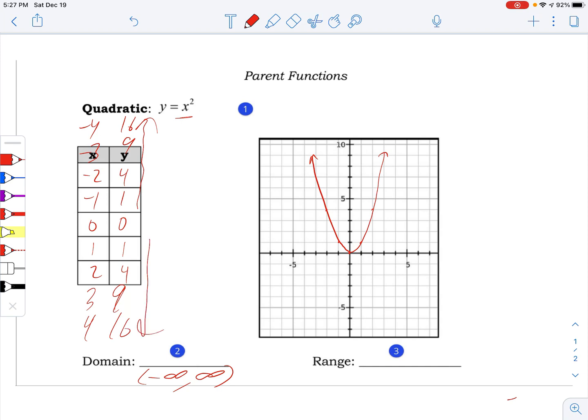There is no x value in the world you can plug in that will get me a negative number. Easier to see that looking at the graph, right? Because on the graph, you can see that the lowest that the y values get is here at zero. And then they go up forever.